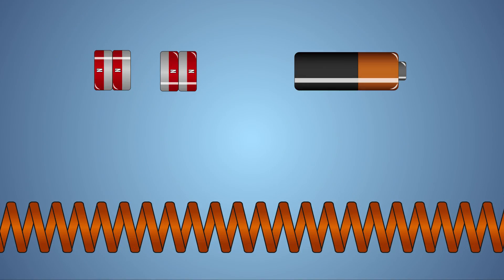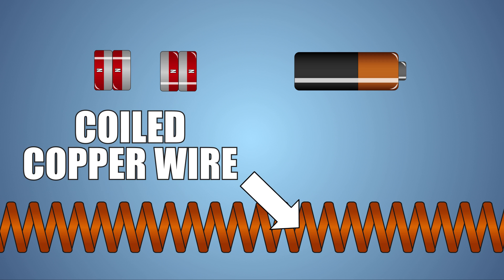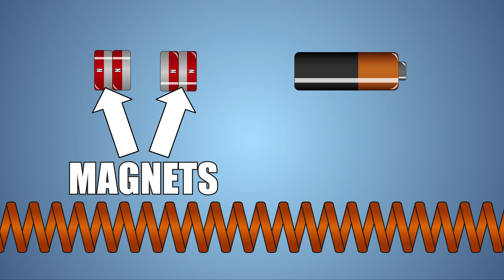Let's look at this experiment a little closer. There are three main components to our train: the battery, which is the source of electrical current and electrons that power the train; the coiled copper wire, which is the conductor that creates the closed circuit that the electrons travel through; and the magnets, which generate two of the magnetic fields which help to move our train.